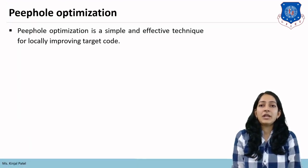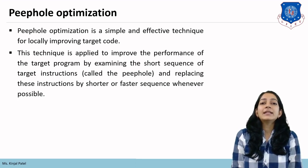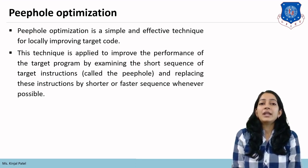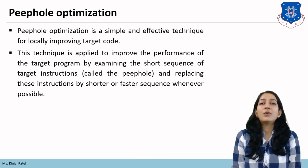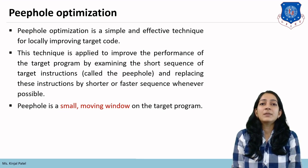So first, what is peephole optimization? It is a simple and effective technique for locally improving target code — peephole optimization is used to generate code efficiently. This technique is applied to improve the performance of the target program by examining a short sequence of target instructions, known as a peephole. We replace these instructions by a shorter and faster sequence whenever possible, and that peephole is a small moving window on the target program.